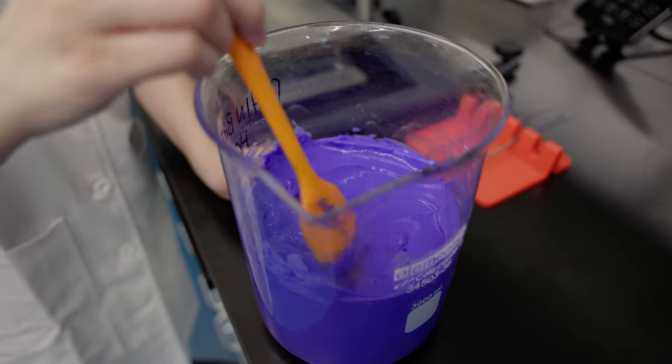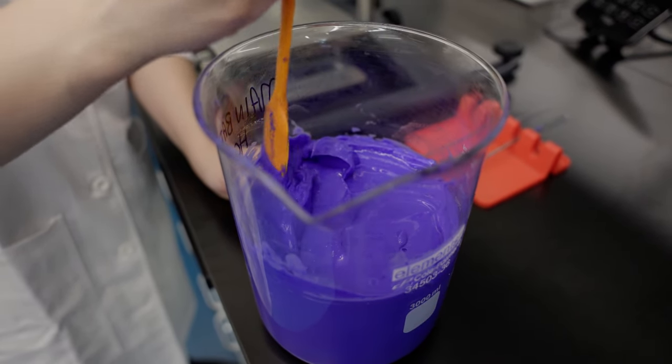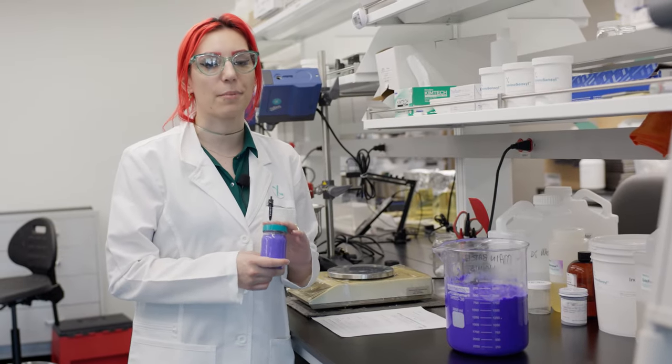This is a lower pH formula, but it'll definitely help with the brassiness in your hair. And that's how you make the natural purple conditioner.